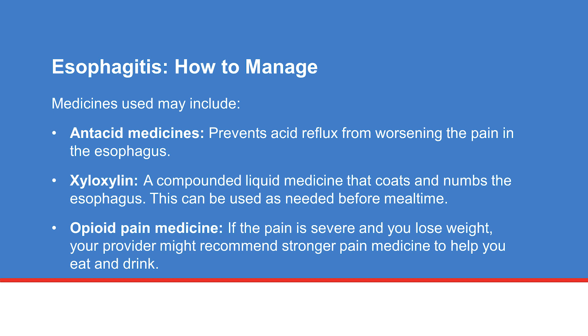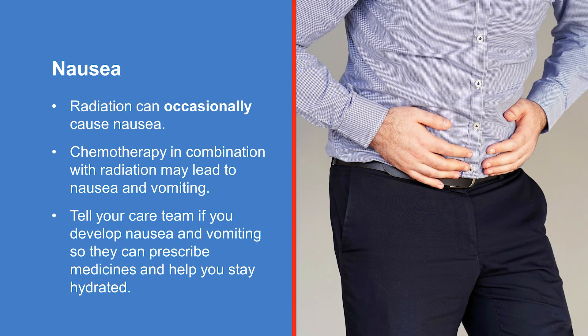Opioid pain medicine is stronger than over-the-counter pain relievers. Opioids are often prescribed if pain is severe and weight loss is an issue, to help with eating and drinking. Radiation occasionally causes nausea. Taking chemotherapy in combination with radiation may lead to nausea and vomiting. If you do develop nausea, it is important to tell your healthcare team so your doctor can prescribe medicines to reduce your symptoms and help you stay hydrated.